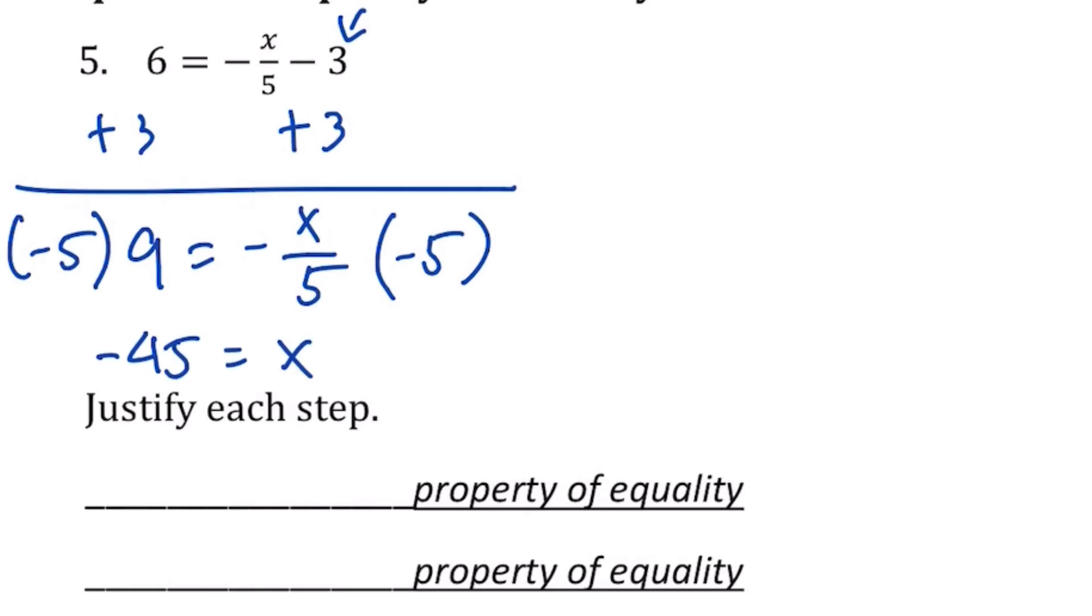And let's justify each step. I added 3 first, so it's the addition property of equality. And then I multiply by -5, so it's the multiplication property of equality.